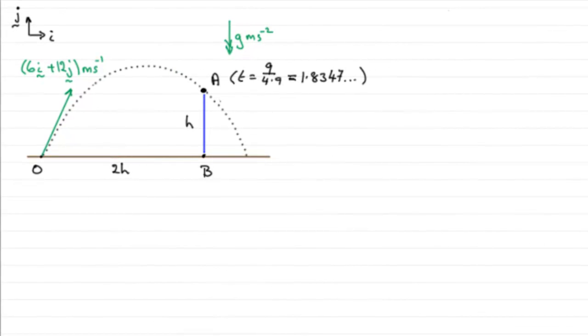Now for this next part, we've got to find the speed of the ball as it passes through A. In the previous part, we found that the time it passed through A from the point of projection was 9 divided by 4.9, which gave us 1.8347 and so on. Now we've got to find out the speed as it passes through A.